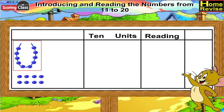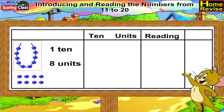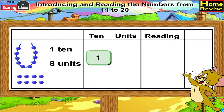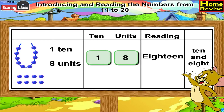We have a string of ten beads and eight extra beads. So under tens you will write one, and under units you will write eight. We will read it as eighteen, or ten and eight.